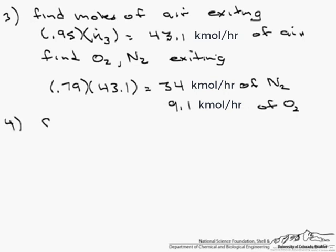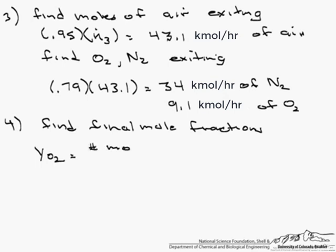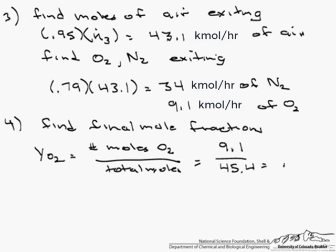And finally we find the final mole fractions. Remember our YO2, which is the mole fraction of oxygen, is the number of moles of O2 over total moles—not moles of air but total moles—which is 9.1 divided by 45.4, which is 0.20. So YN2 we find the exact same way: 34 divided by 45.4, and that equals 0.75.